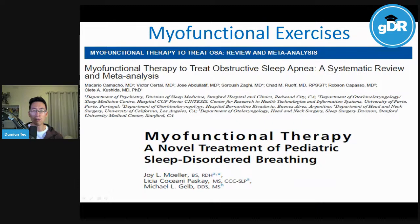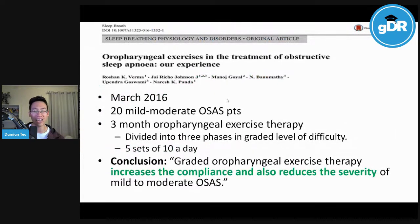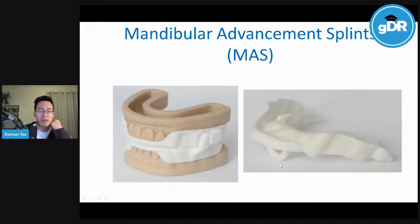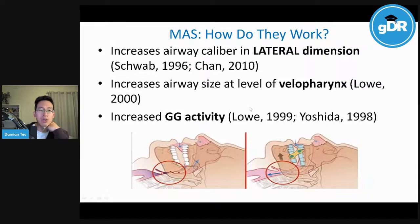Myofunctional therapy is something I've been using a lot more in the last few years for sleep apnea. Research shows it can decrease the AHI by 50–60% in adults and kids. The tricky thing is compliance, especially with adults. Other research shows that combining myofunctional exercises with mandibular advancement splints increases compliance and can reduce the severity of sleep apnea — especially for splints that aren't fixing everything on their own.